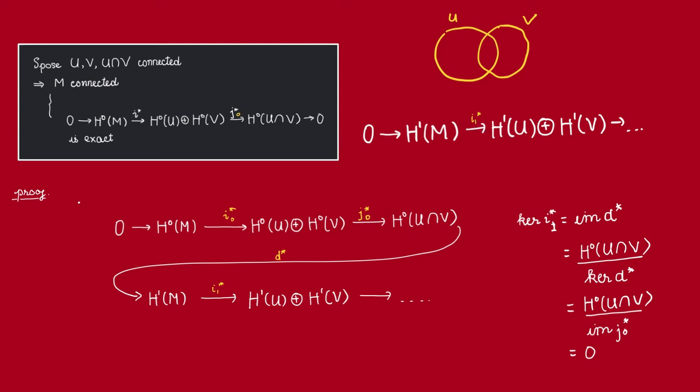Well, that's because of exactness here, right? So because of exactness here, we know that the kernel of this I1 is going to be the image of this D map. Now by the first isomorphism theorem, this image is going to be isomorphic to H0 of U intersect with V quotient now by the kernel of this D map.